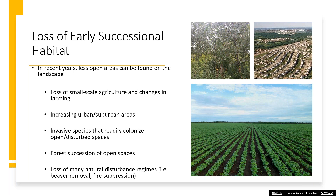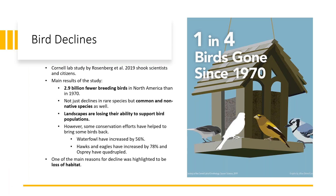Another thing we're seeing is increasing urban and suburban areas — old farm fields make excellent areas to put suburbs. With us moving into these areas, invasive species have become more and more of a problem; they readily colonize open and disturbed spaces, degrading the habitat. In addition, the natural process of forest succession is still happening, but there's no natural disturbance opening up the canopy anymore because we're doing fire suppression and we don't allow beavers to reach the point where wet meadows typically form.